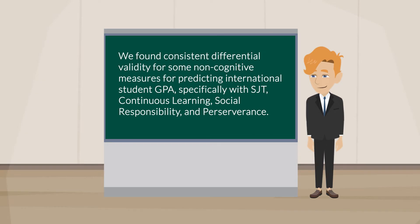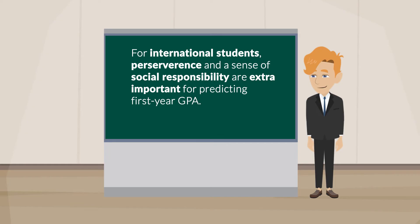The first line of Jacob's discussion paragraph says: 'We found consistent differential validity for some non-cognitive measures for predicting international student GPA, specifically with SJT, continuous learning, social responsibility, and perseverance.' For a journal article, or when you're already in the sub-niche within the sub-field of hiring decisions or employee selection, this works fine. But to anybody who doesn't specialize in this subtopic, it can be a little jargony and hard to understand. Research on usability writing suggests that even experts prefer plain language to jargon, so we're going to translate this into a plain English version of this finding.